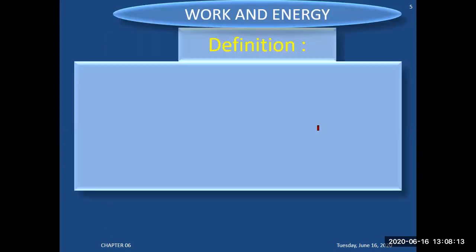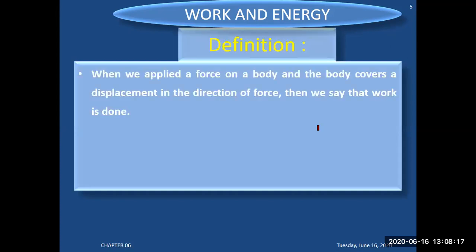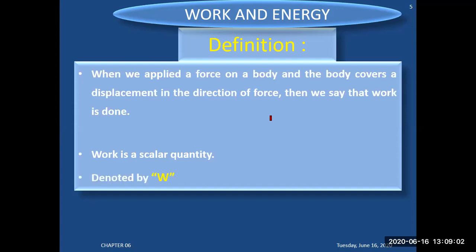The definition of work done: when we apply a force on a body and the body covers a displacement in the direction of the force, we say that work is done. Work is a scalar quantity because when we say 10 joules or 20 joules of work is done, there is no indication of direction. It is the dot product of two vectors, and a dot product is always a scalar. Work is denoted by W.